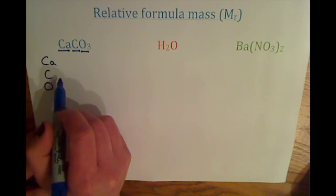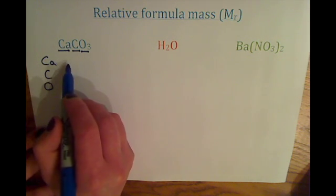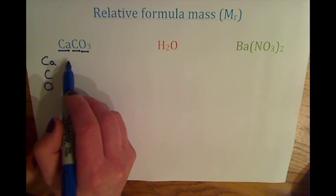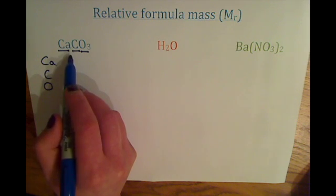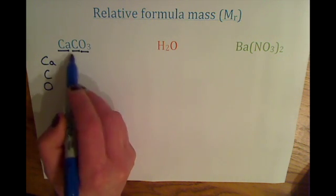And then you need to write down how many atoms of each element there are. So if there is just one atom, they don't put a number 1 there. If there's any more than one atom, you'll find a different number.